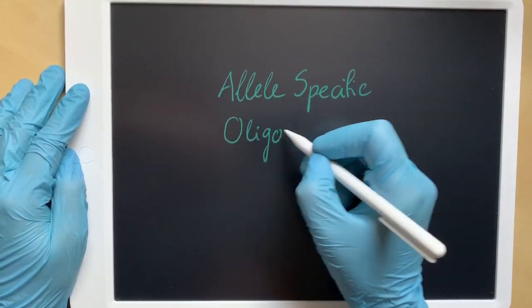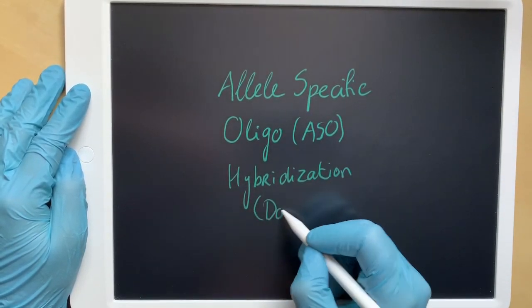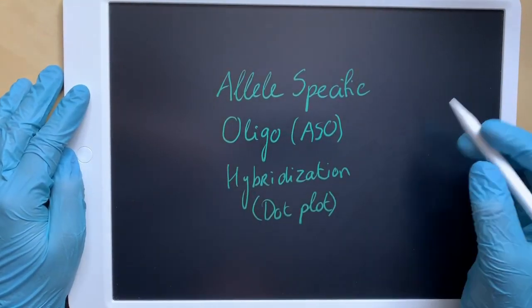Allele-specific oligo-hybridization, or dot-plotting, is a common tool in molecular biology research, forensics and genetic testing.